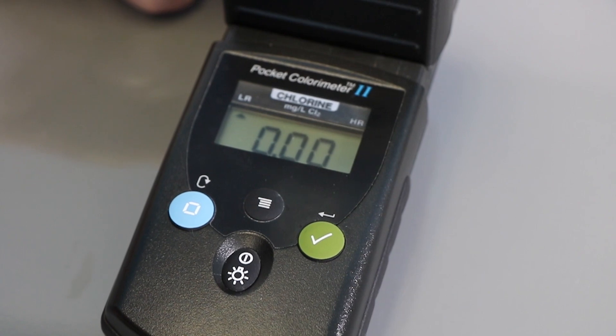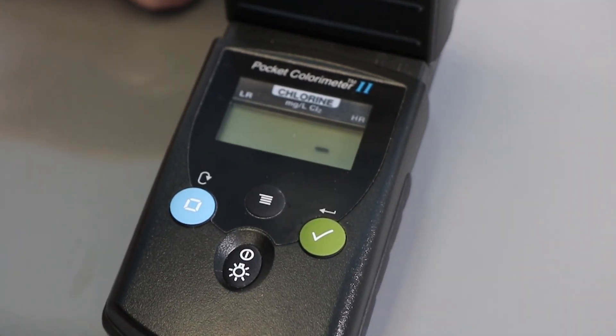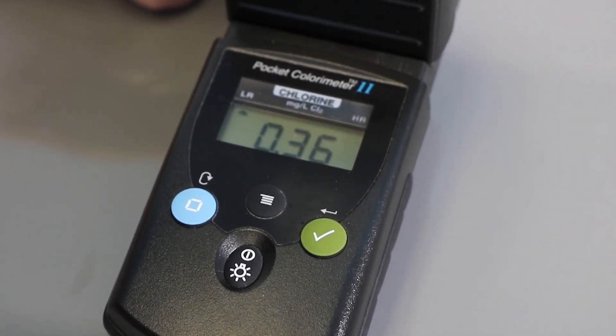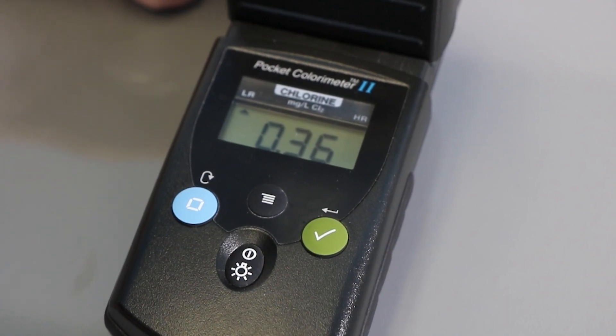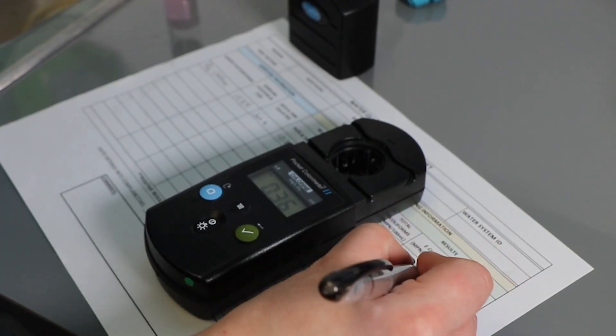With the chlorometer on a flat surface, press the checkmark symbol button. For free chlorine, this needs to be done within one minute of adding the DPD to the sample water. Record the number on your field sample data sheet.